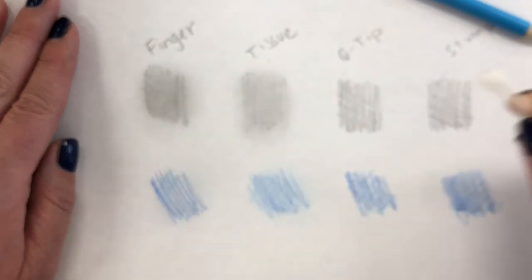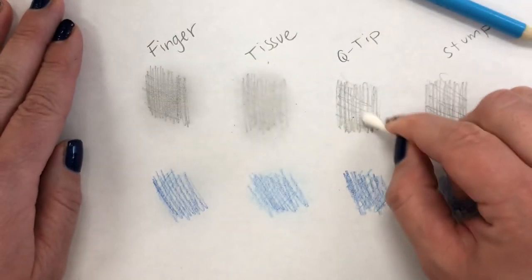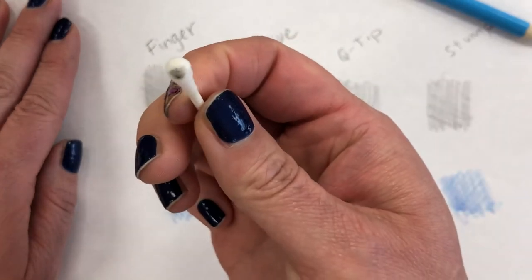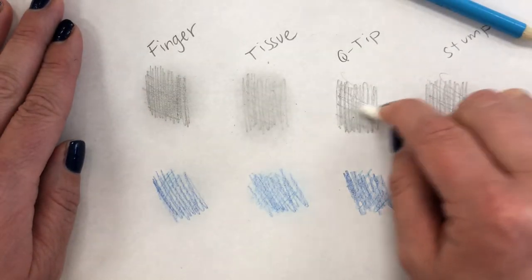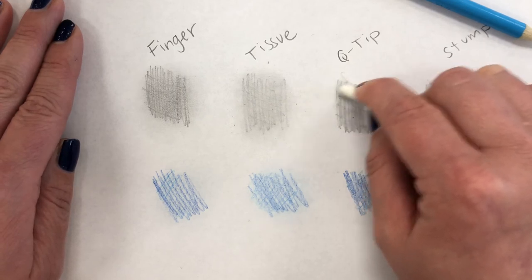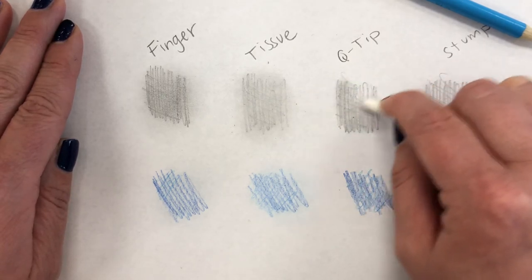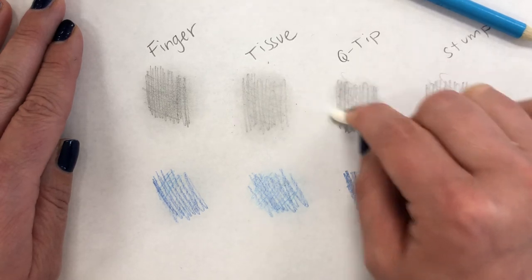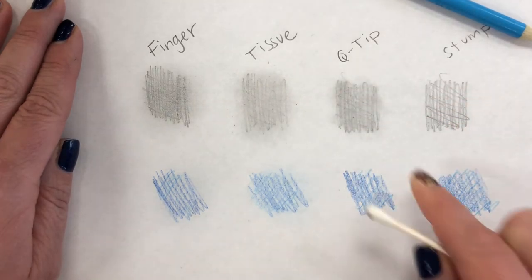Next up, Q-tip. Q-tip is going to give you a lot of control because it's so small compared to the tip of your finger. I guess not if you have really, really little hands, but definitely is smaller than my fingers. Okay, that's a nice even transition there.